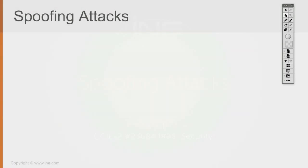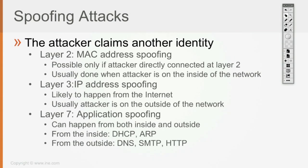Let's think about spoofing attacks. Spoofing means that the attacker is going to claim another identity. Based on the method, we have layer 2 spoofing attacks, which means the attacker is going to spoof the MAC address of a specific endpoint. This is possible only if the attacker is directly connected at layer 2, because the MAC address is relevant only within a specific VLAN — the physical address identity is lost across layer 3 boundaries. This is usually possible when the attacker is physically connected on the inside of the network.